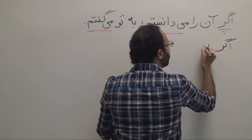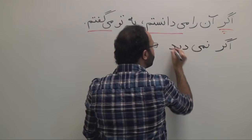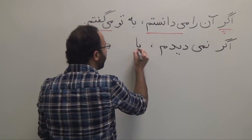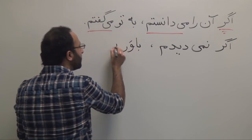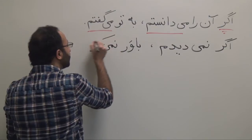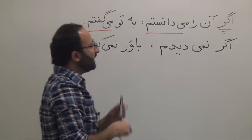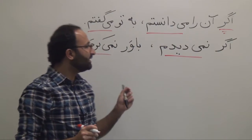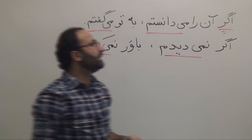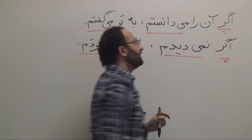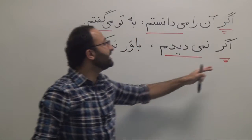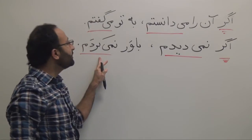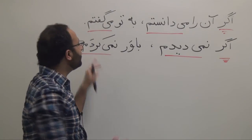اگر نمی دیدم باور نمی کردم. Here, again, we have two verbs in the past tense — in the if clause and in our main clause. Here is our conjunction اگر. So you are saying: if I had not seen, I would not have believed.